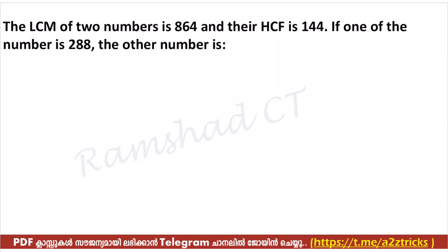The LCM of two numbers is 864 and their HCF is 144. One of the numbers is 288 — find the other number. Two numbers: one is 288. We use the relationship: LCM times HCF equals the product of the two numbers.